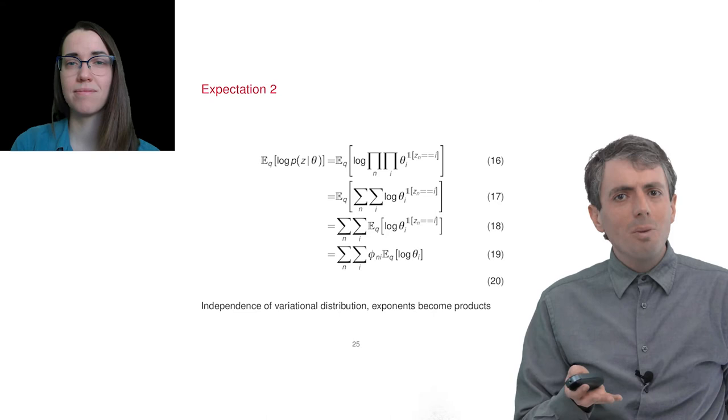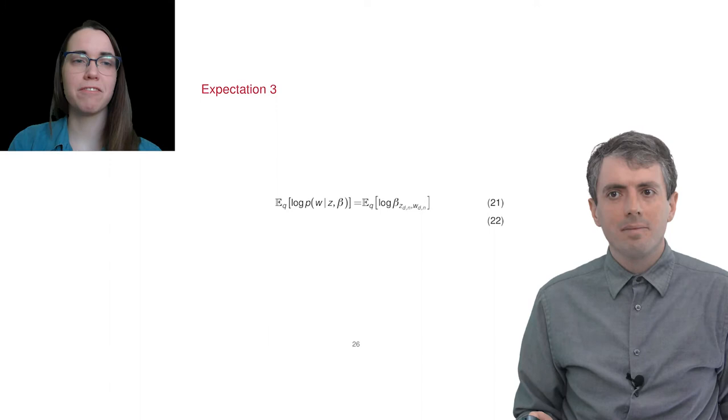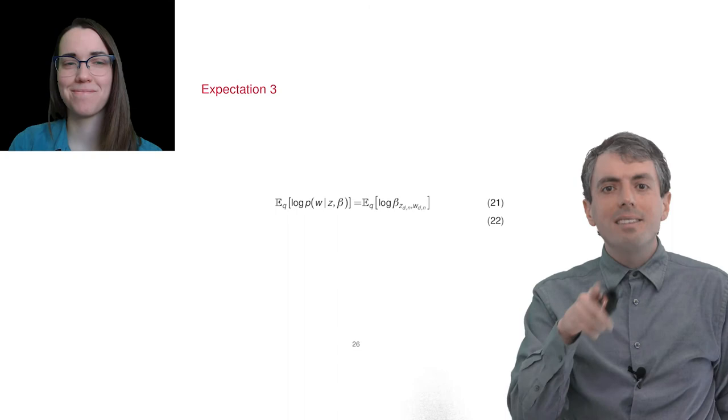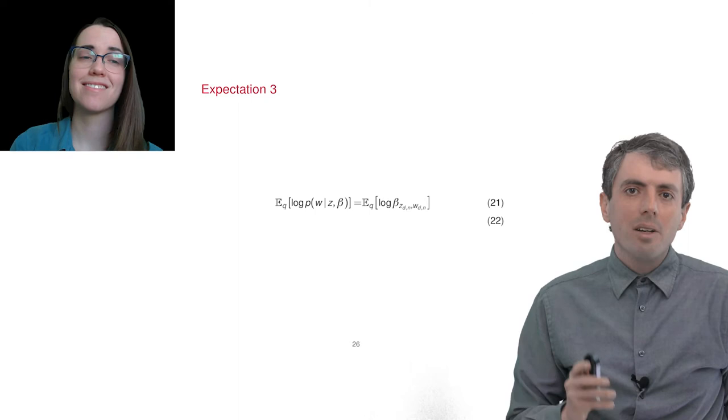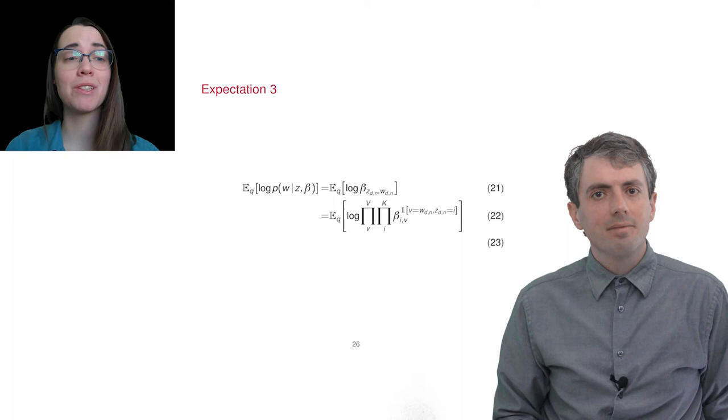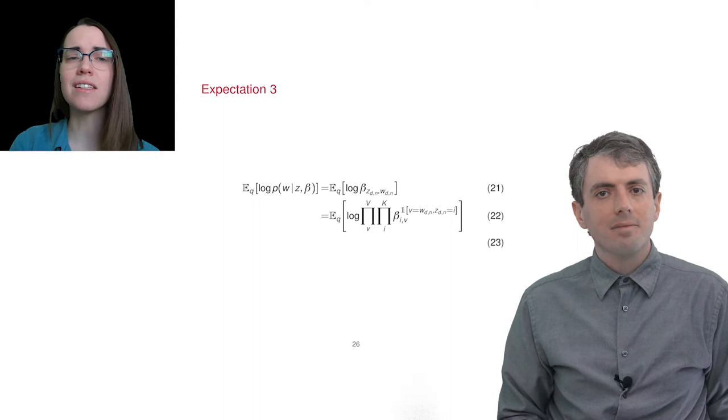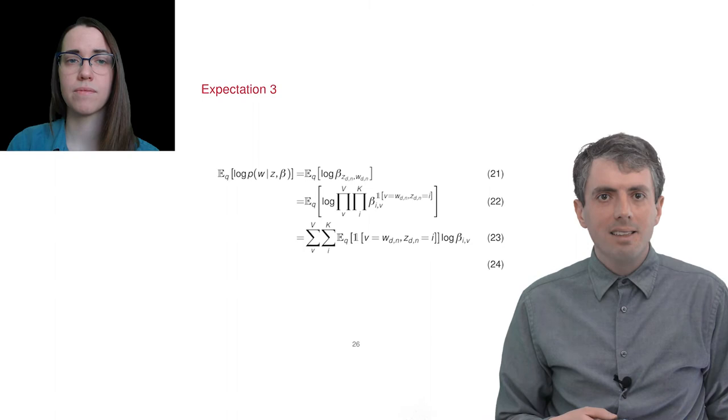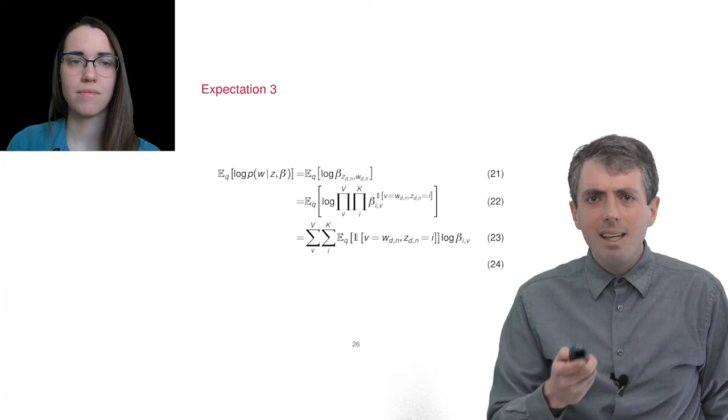In this case, a document only uses some of the topics, and which topics it uses is governed by the topic assignments Z sub n. In the joint distribution, this is reflected by theta raised to the topics the document uses. So the indicator is like an if statement saying if word n uses topic i, then include theta i in this product. Exactly. I love it. But because this is a log probability, it becomes a sum over logs. But what happens to an exponent when we take the log? You just multiply that log by the exponent. And then the expectation of the indicator function is just the probability of that underlying event, which is phi sub n comma i.